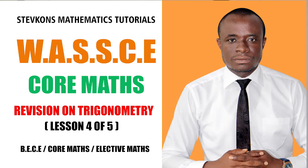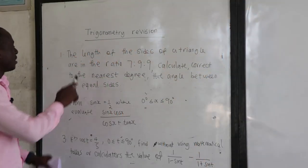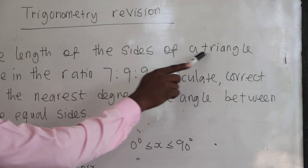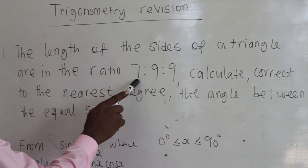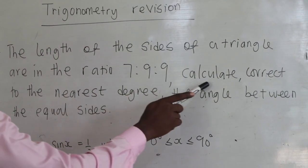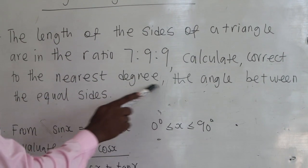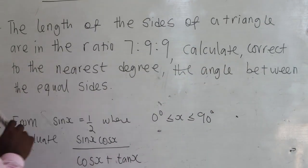Now let's do some trick questions revision. Let's see the first one. The length of the sides of a triangle are in the ratio 7 is to 9 is to 9. Calculate, correct to the nearest degree, the angle between the equal sides.